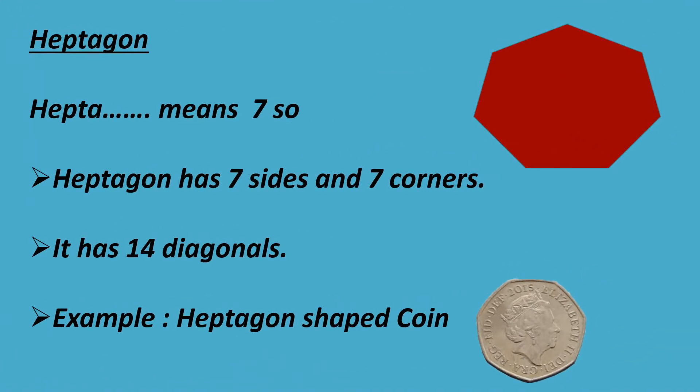Hepta means seven. So, heptagon has seven sides and seven corners. It has 14 diagonals. Example: heptagon-shaped coin.